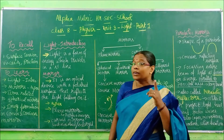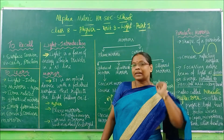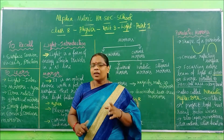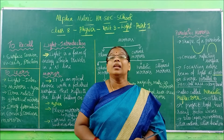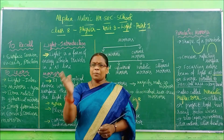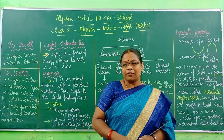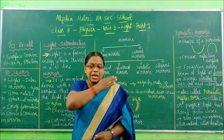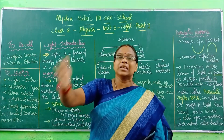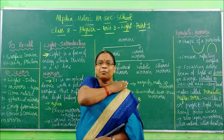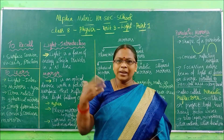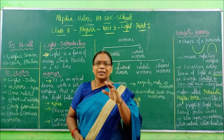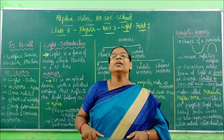The plain mirror will give a virtual and erect image. Erect means straight — not inverted. But only one thing: it will give a laterally inverted image. That means left appears to be right and right appears to be left. For example, if you raise your right hand, in the mirror it appears to be on the left side. That inversion is called lateral inversion.